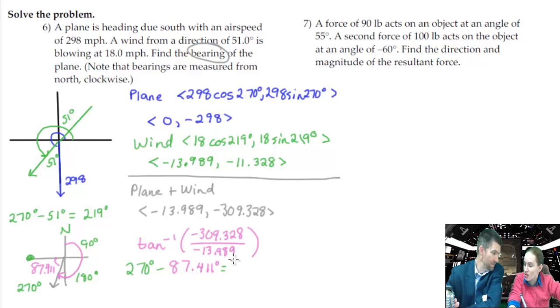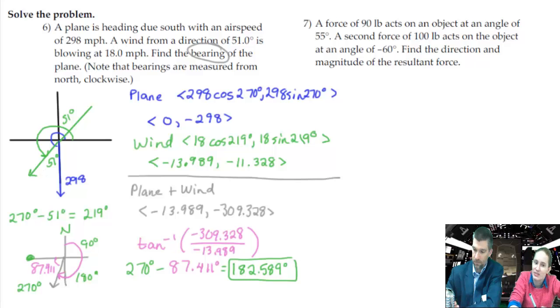The 411. Yeah, that's the 411. So 182.589 is our answer. 182.589 degrees. All right,